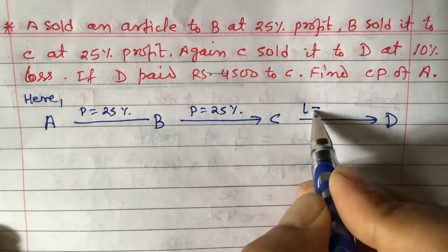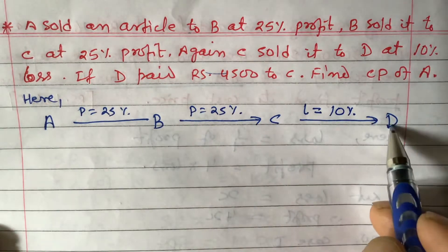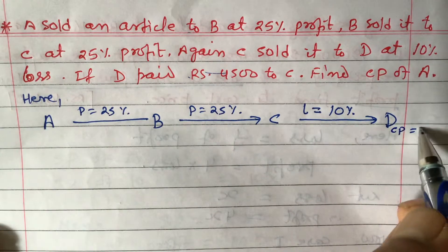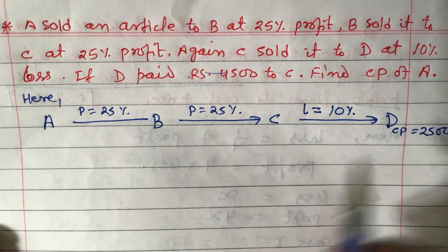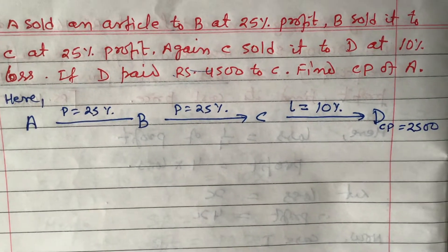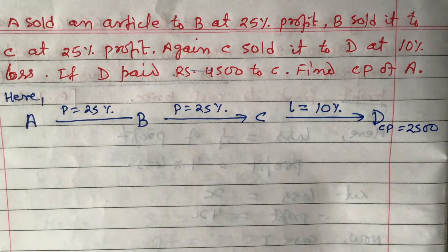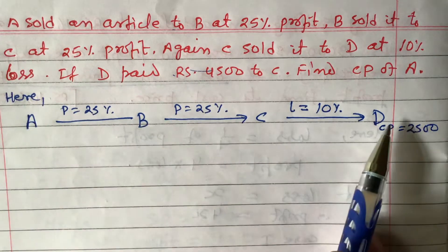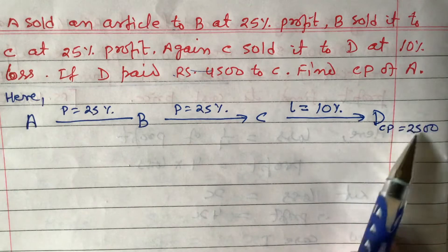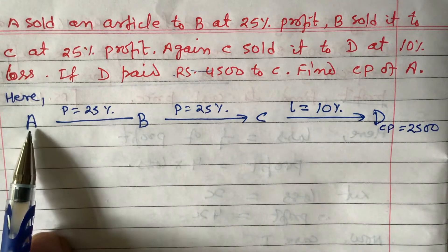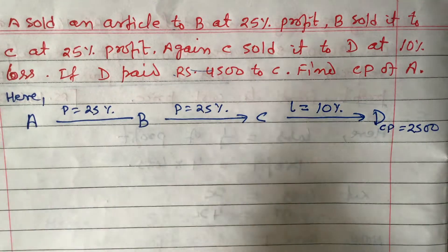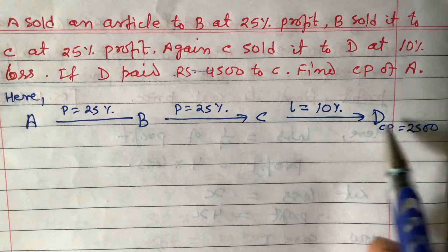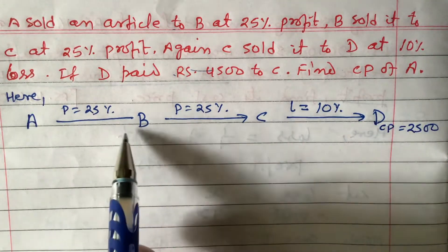D paid rupees 4,500, so CP of D = ₹4,500. The question asks us to find the cost price of A. Sometimes the cost price of A is given and you are asked to find the cost price of D, and sometimes the cost price of D is given and you find the cost price of A. We start from wherever the value is given — here D is given, so we'll work backwards from D to C to B to A.